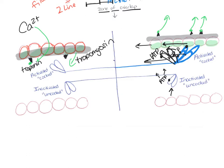Now we're going to start over. The ATP molecule on the myosin head is going to split, and when that happens, that myosin head will become activated. As soon as it's activated, it will bind to an active site on that actin molecule. As soon as it binds, the phosphate is released, the bond gets tighter, the ADP is released, and that makes the activated myosin head pivot and pull that actin molecule closer to the M line.